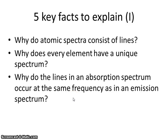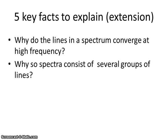There are probably five key facts you may be asked to explain in examination questions. Three of them are relatively straightforward: why atomic spectra consist of lines, why every element has a unique spectrum, and why the lines in an absorption spectrum occur at the same frequency as those in an emission spectrum. There are two much harder ideas which occur less frequently in examination questions, but we need to be prepared for these as well — namely why lines converge at high frequency, and why lines often consist of several groups or sets.